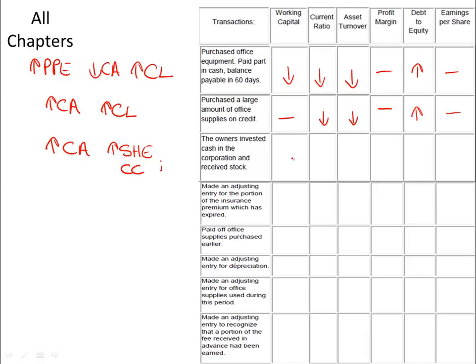Working capital will increase because current assets went up. Current ratio will increase because current assets went up. Asset turnover will decrease. Profit margin has no impact because nothing to do with revenues or expenses. Debt to equity will be reduced because shareholders' equity increased. And earnings per share will be reduced because the number of shares outstanding increased — we sold additional shares of stock, so there are more shares out.